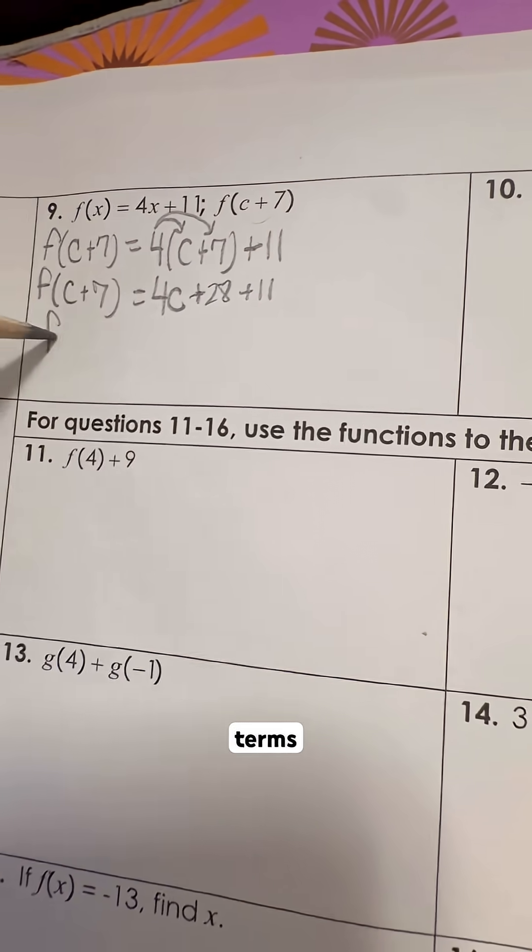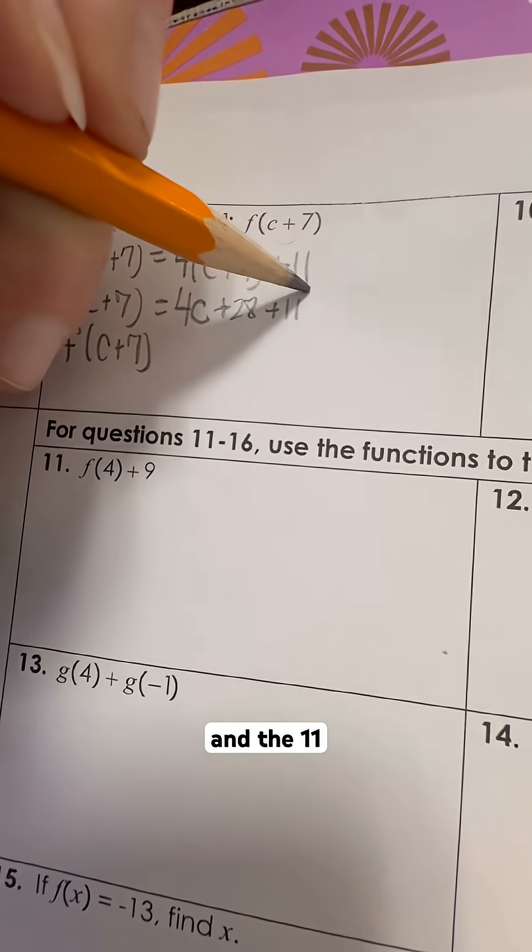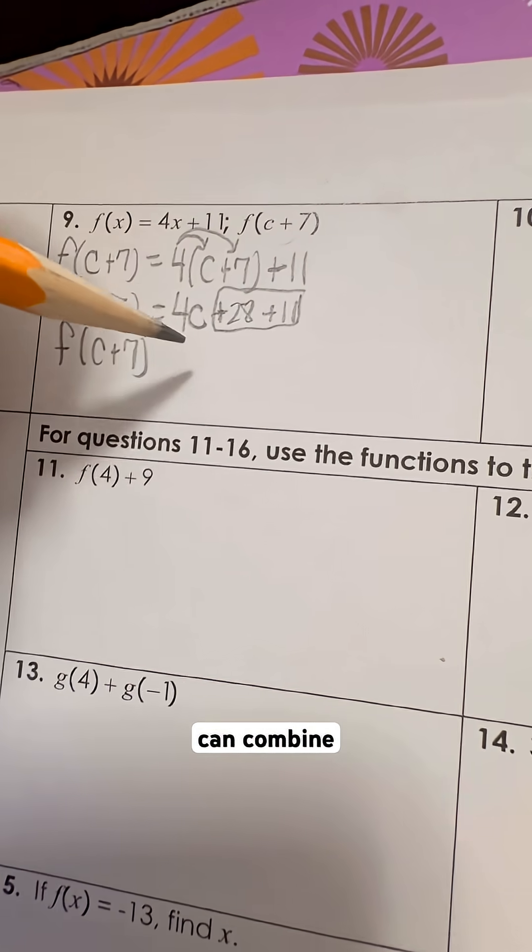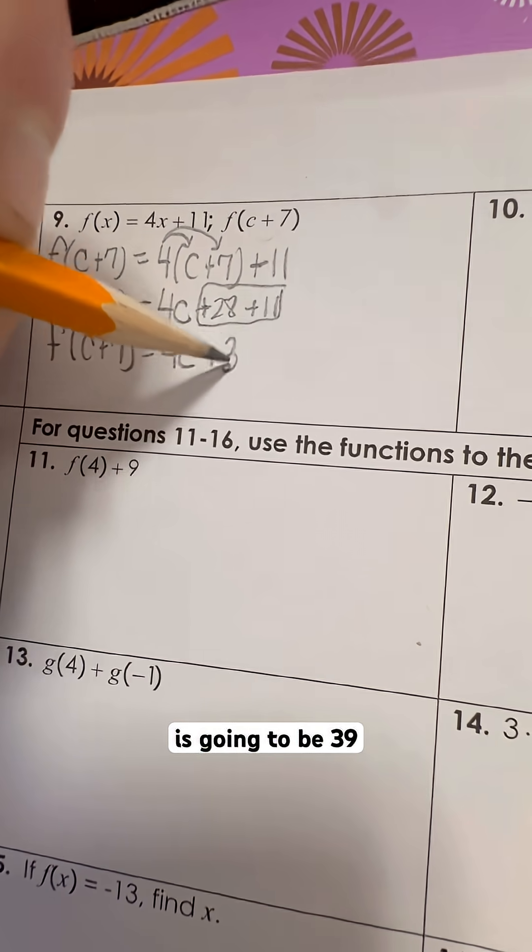We can combine like terms because the 28 and the 11 can combine. C we can't do anything with. It just stays 4c. This is going to be 39.